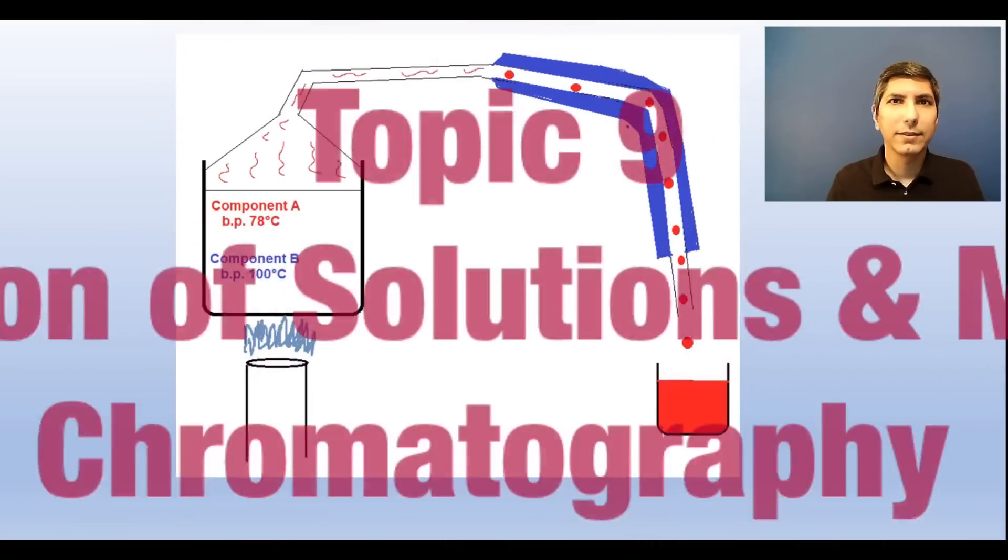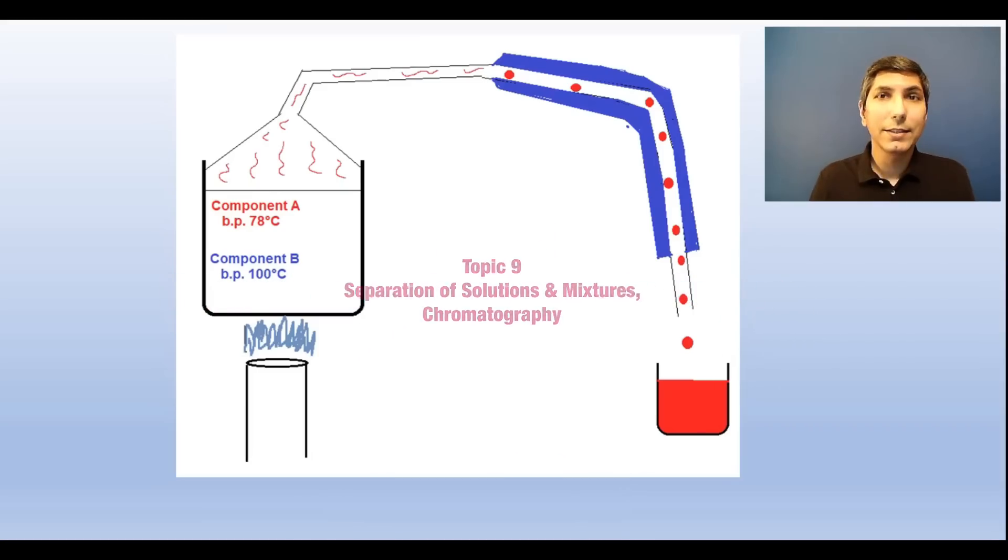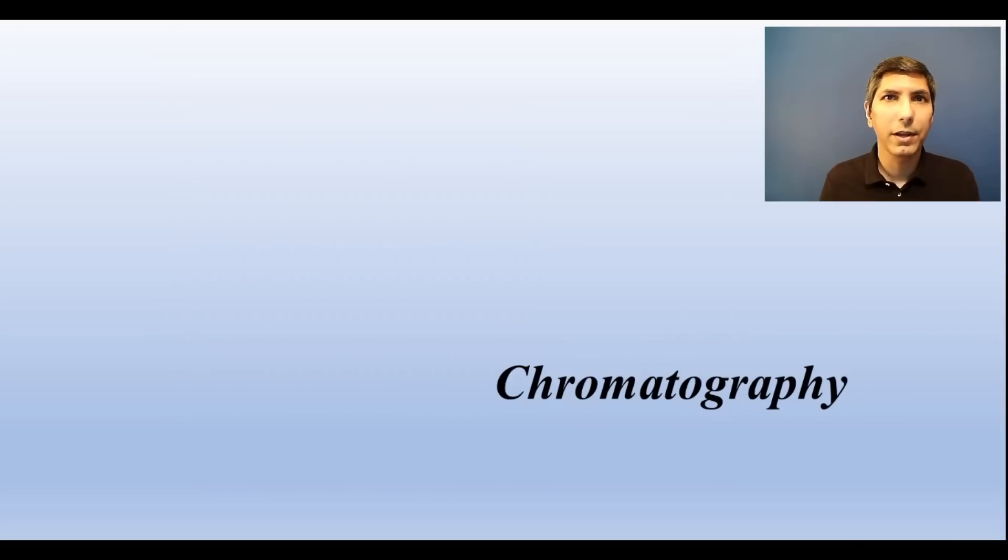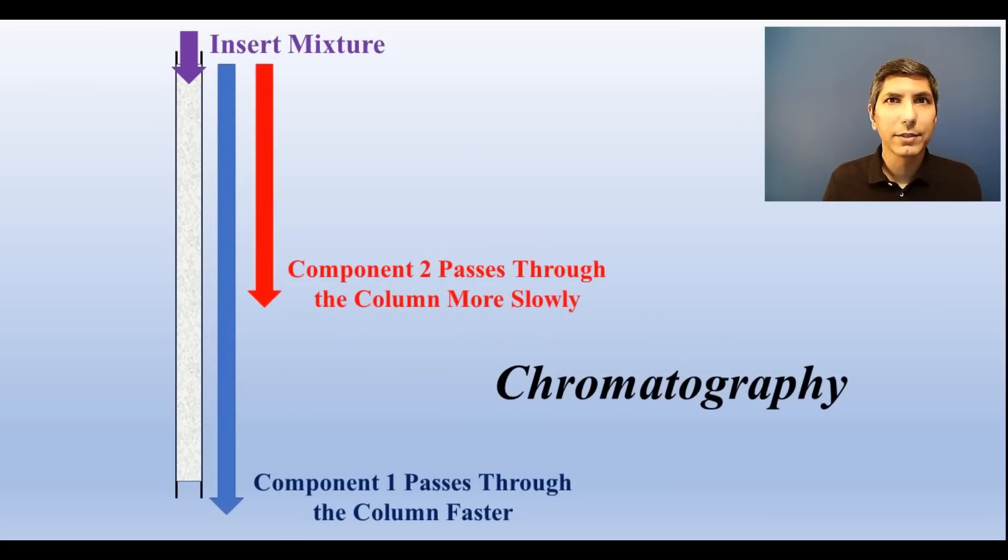There are two primary ways to separate solutions into components in AP Chem. Distillation takes advantage of the fact that different substances have different boiling points. So you can boil the mixture and the different components will boil away at different temperatures. You can collect the steam and condense the components into different containers like you see in this diagram. Now, chromatography involves allowing a mixture to pass through a column. Some of the components adhere more strongly to the column, so they pass through it more slowly. Other components, like the blue here, don't adhere as well to the column, so they pass through more quickly. The column itself is sometimes called the stationary phase, and the substances that pass through the column are called the mobile phase.